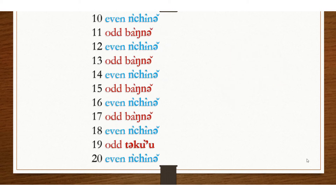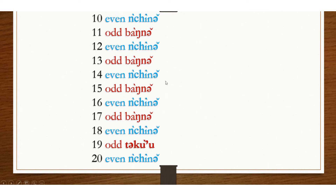From 10 to 20, the even numbers are 10, 12, 14, 16, 18, 20, and the odd numbers are 11, 13, 15, 17, 19.